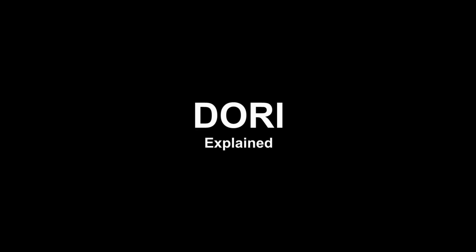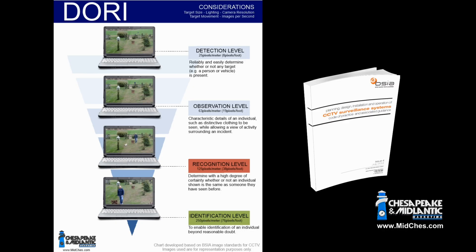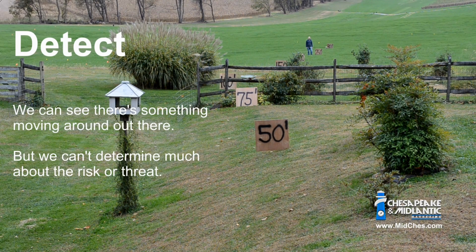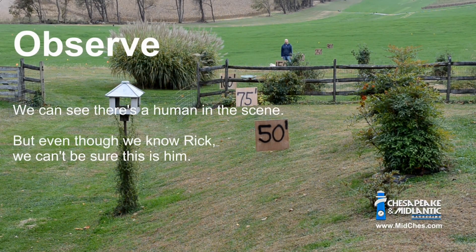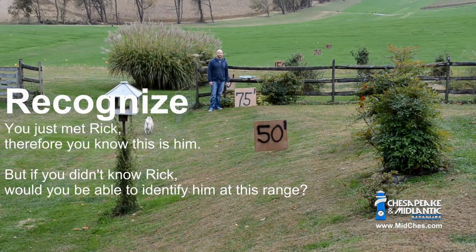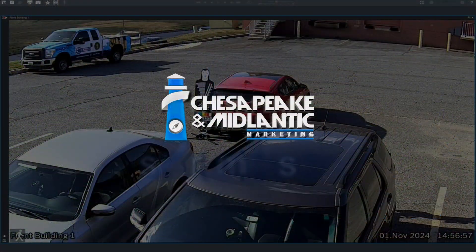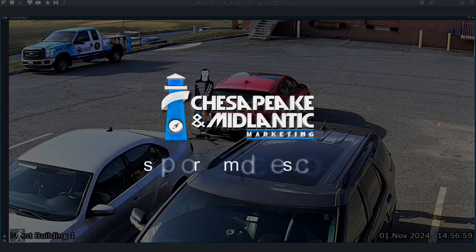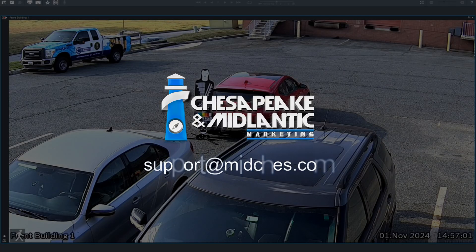Do you know DORI? We have created an article and video explaining the concept of DORI, which explains the reasons to select the proper lens for the desired camera task. Simply put: do you wish to detect that someone or something is present? Do you wish to observe something in particular? Do you desire to recognize someone you're already familiar with coming through a doorway? Or do you wish to identify someone or read a license plate in recorded footage with certainty? Please click the link in this article to access the DORI article and video.